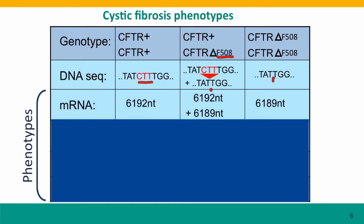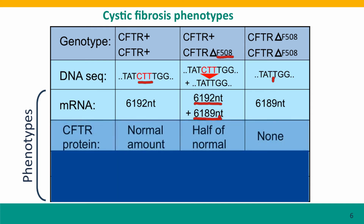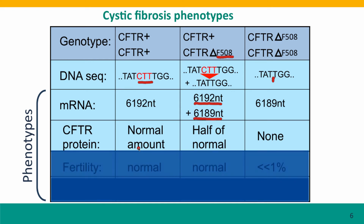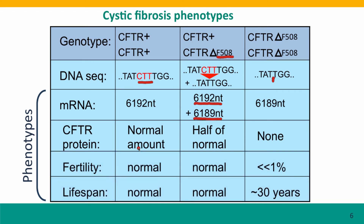What about the phenotypes? If we think of messenger RNA as a phenotype, then the heterozygote has both — the full-length messenger RNA and the shorter messenger RNA. For protein production, the double mutant produces none, but the heterozygote produces half as much protein because they have one functional copy of the gene. For fertility and lifespan, the phenotype of the heterozygote is the same as the wild-type homozygote — we don't see any health-related problems at all.